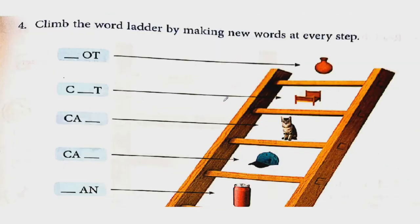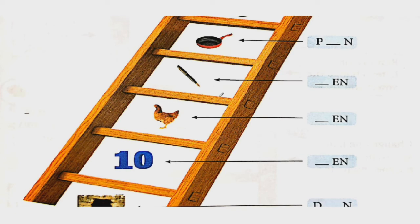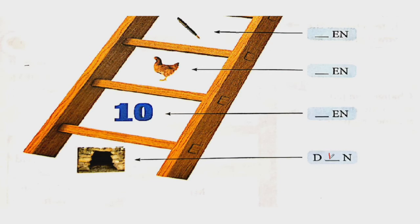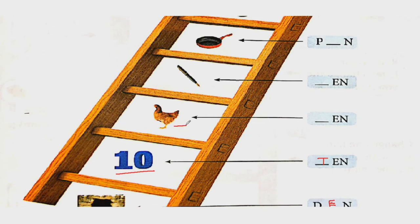Next. Climb the word ladder by making new words at every step. At each step you are given a picture and in front of it blanks are given. You have to complete it and climb the ladder. Now we have to climb the ladder. So we are going to start from the last one. See, this is the picture of den. So D-E-N, den. Look at this number. What is this? Number ten. So T-E-N starts with consonant T. The picture is of hen. So we will write H, H-E-N, hen. It is consonant. Picture of pen. P-E-N, pen. P is consonant. This is the picture of pan. So P-A-N, pan. A is vowel.